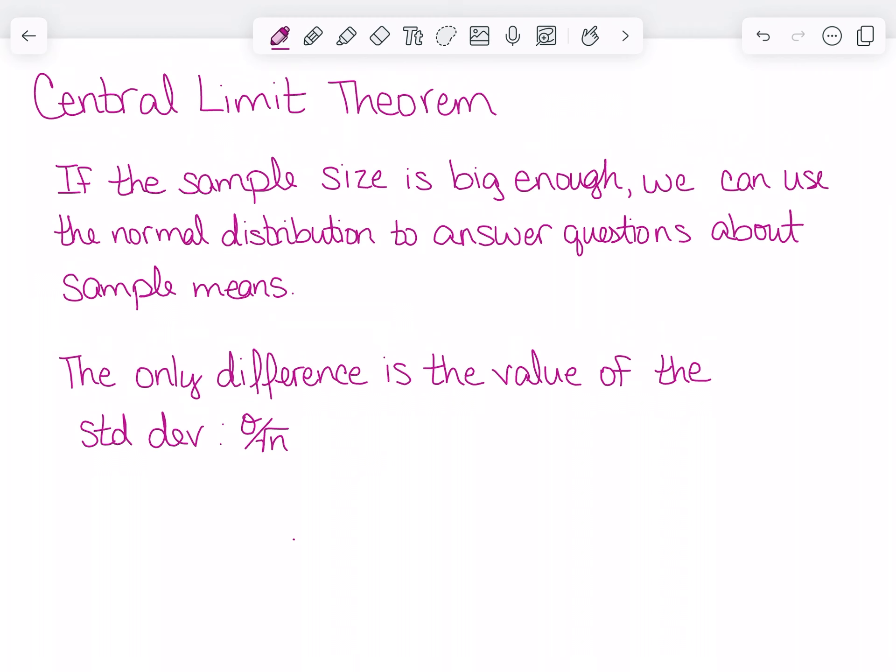So the first question I want to look at is what do we actually mean by big enough? Well, if our original variable was normally distributed, then there is nothing we need to consider. Any sample size would work. But if our original variable is not normal, or we're not sure if it's normal, then we need our sample size to be greater than or equal to 30 in order to use this.